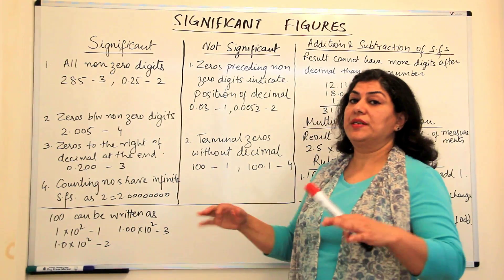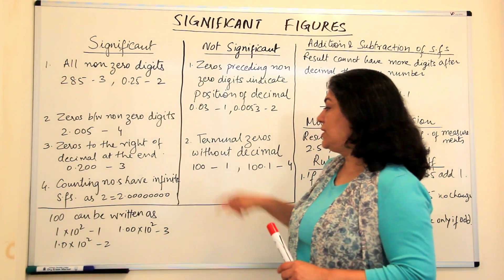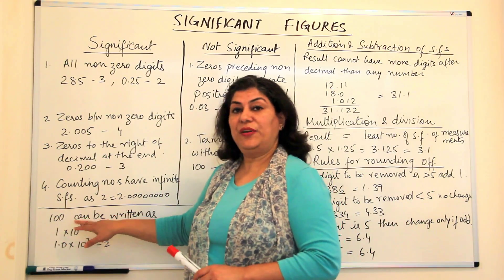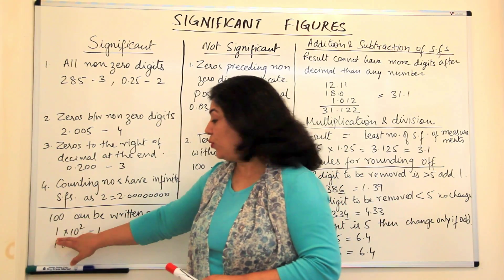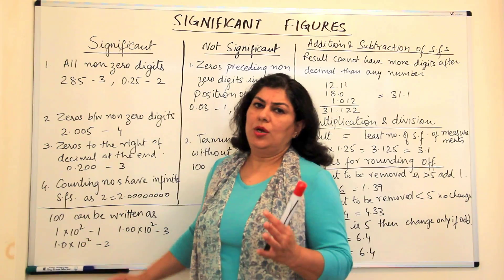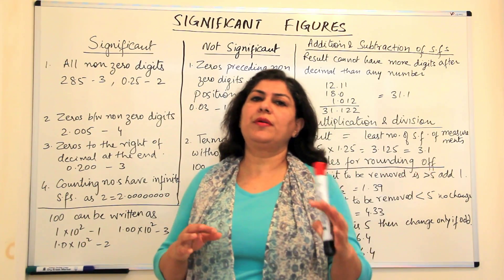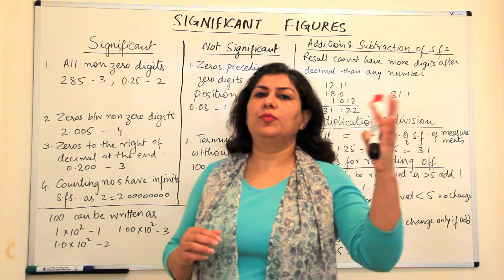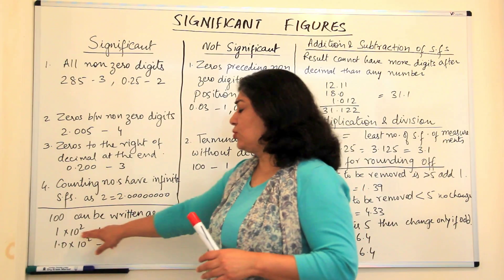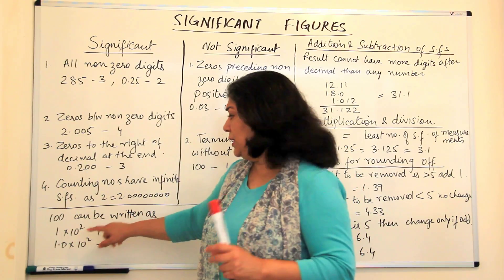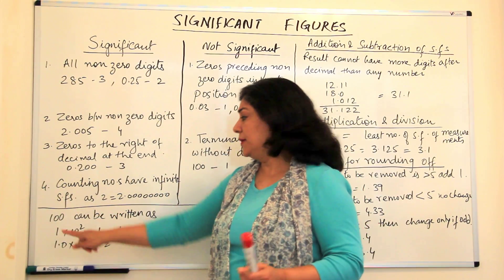then in scientific notation, I would have written this as 1 into 10 to the power 2, which means that I'm only counting the hundred, it could be 101, it could be 102, it could be 110, it could be 120, even the second digit is uncertain here in the 100.